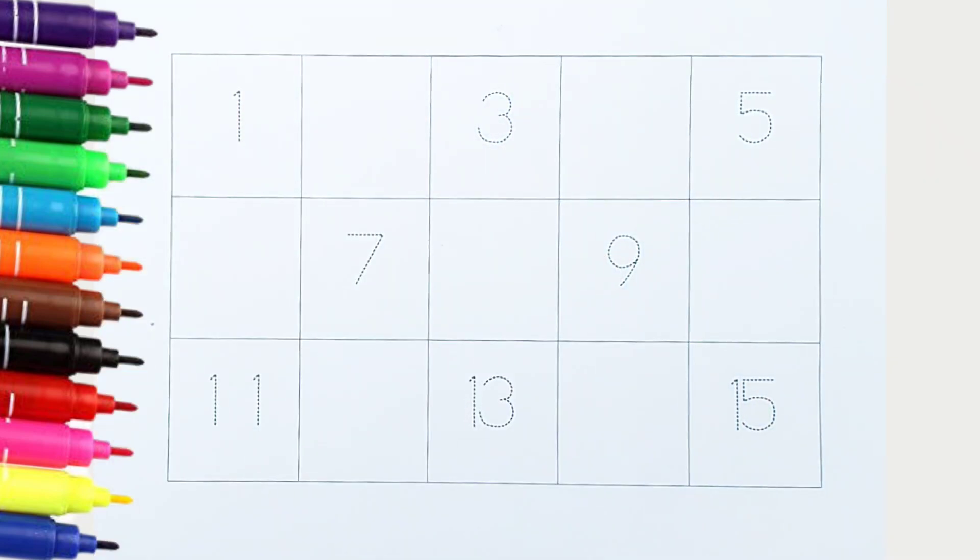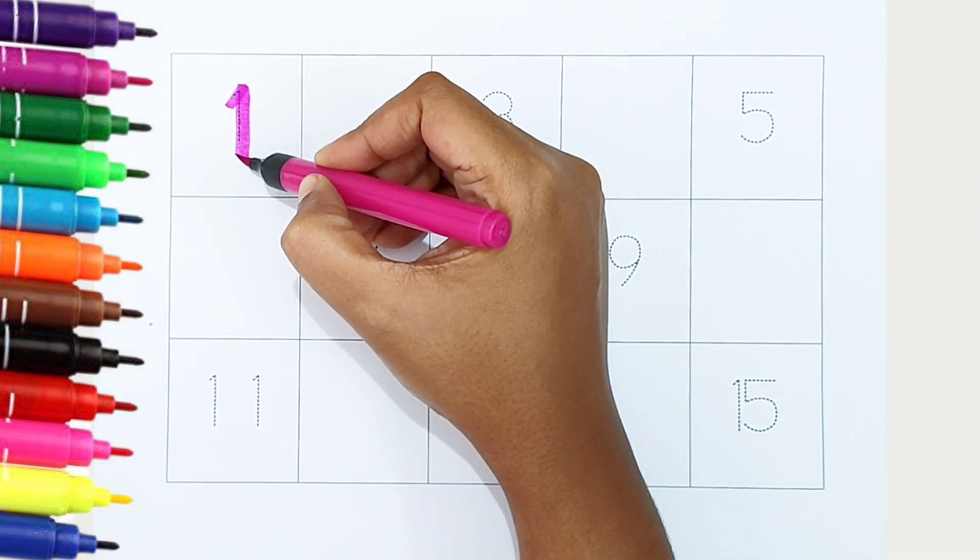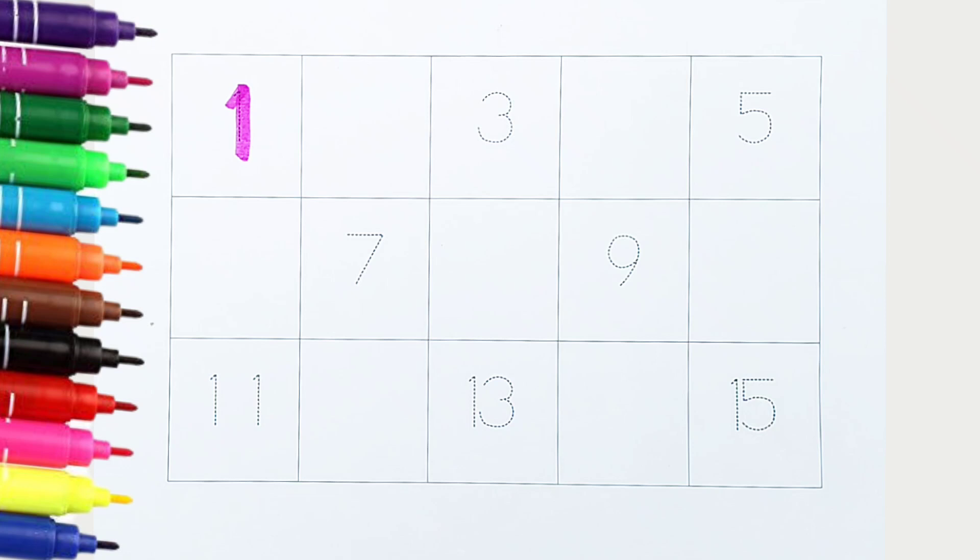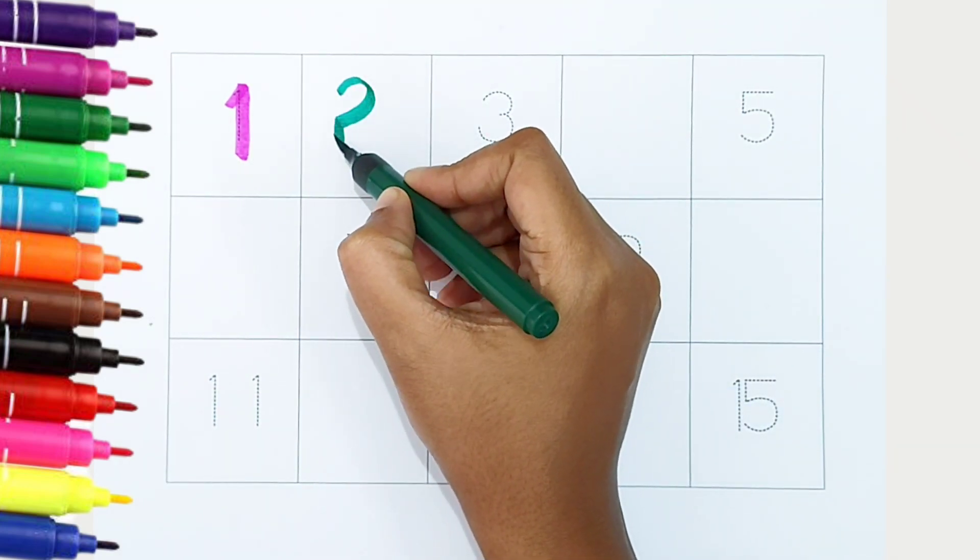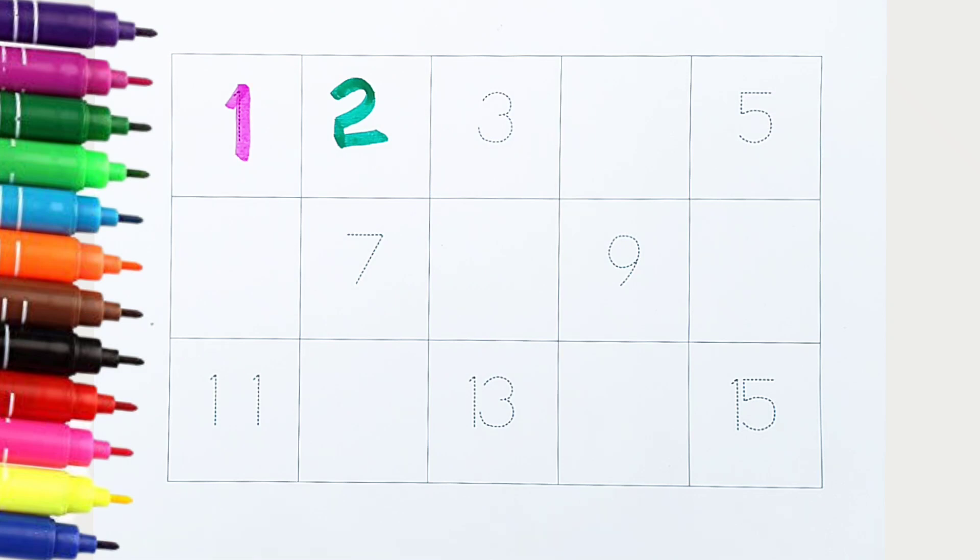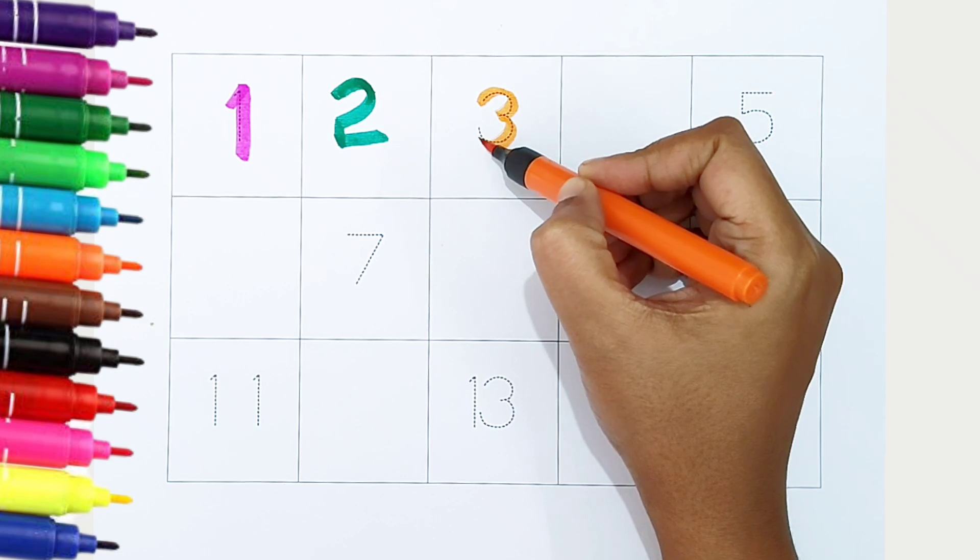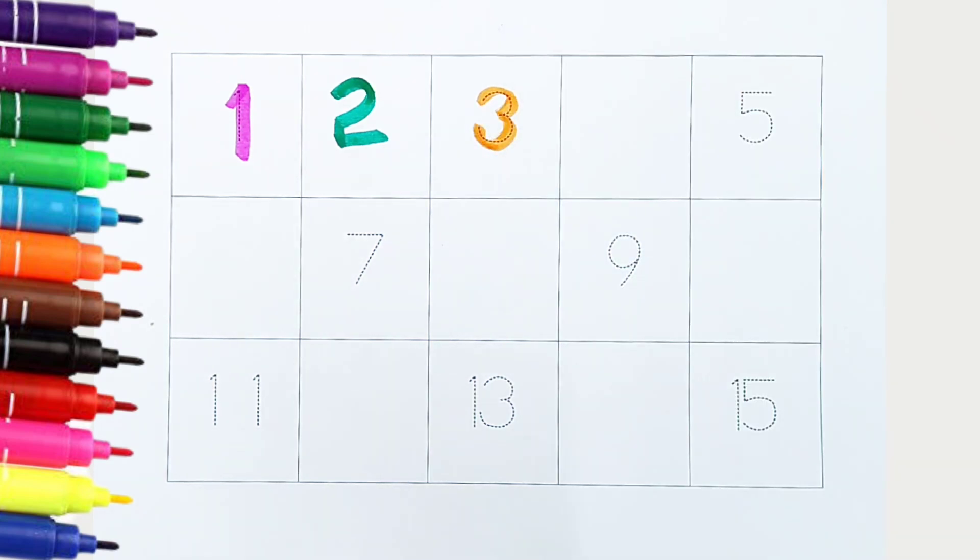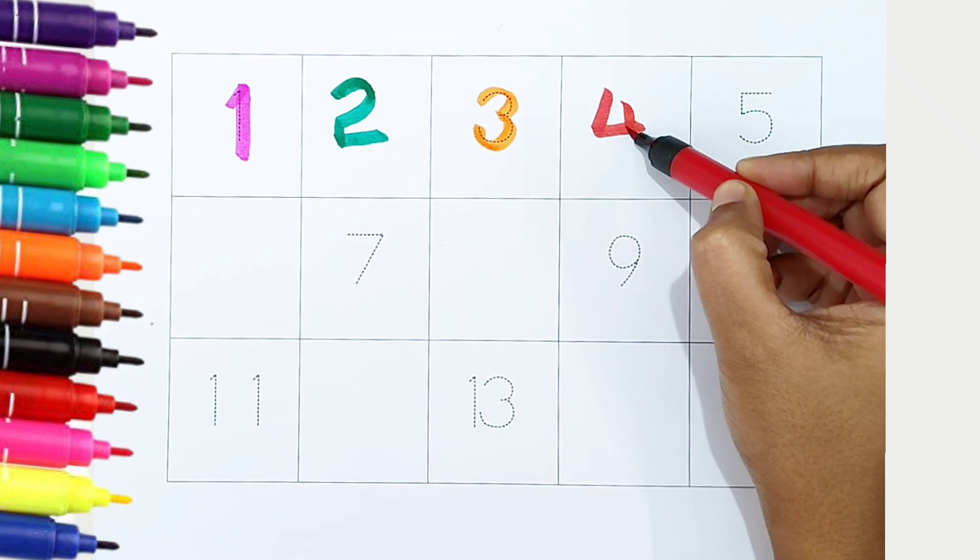Kids, today we can learn the numbers from 1 to 15. Let's begin. One, dark pink color. Two, dark green color. Three, orange color. Four, red color.